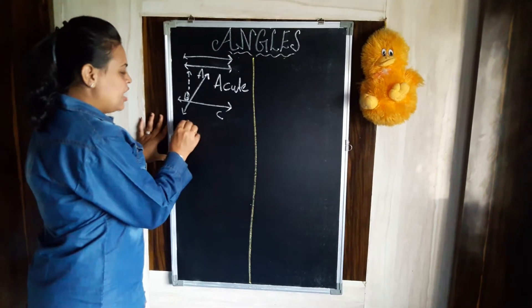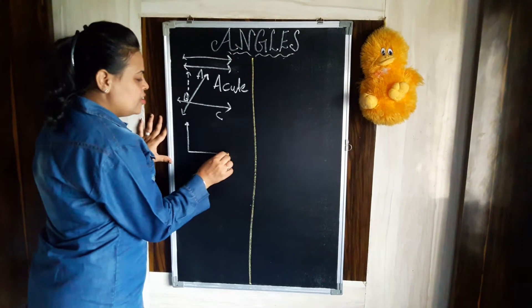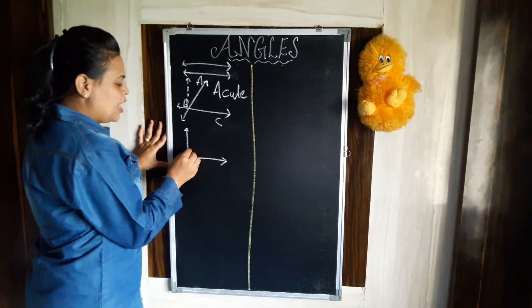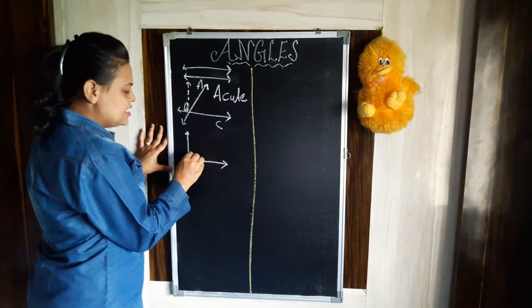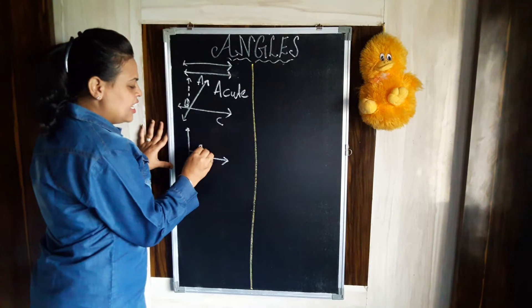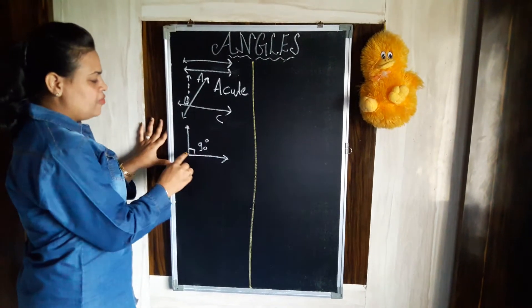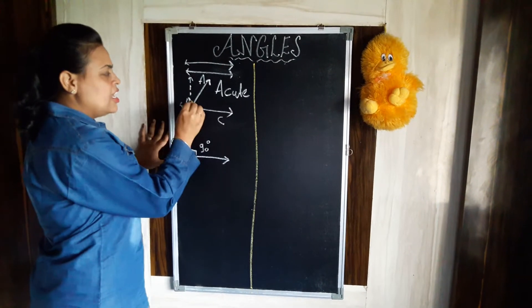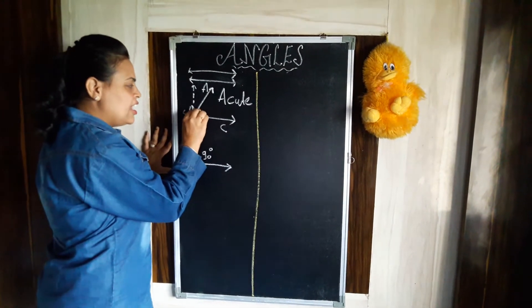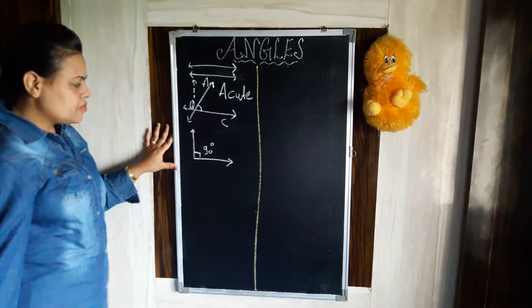Then we have a second type of angle — that is a right angle. A right angle forms 90 degrees, and we show a right angle with a small square symbol. Another way is shown like a curve.